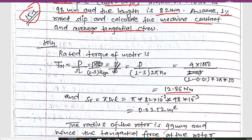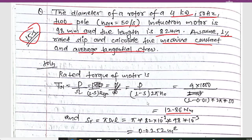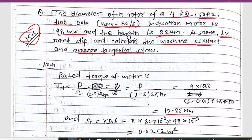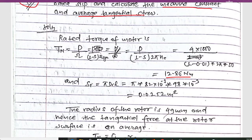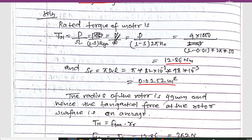The rotor surface area is calculated as Sr = π · D · L. Here the diameter D is 98 mm and the length L is 82 mm. So Sr = π × 82 × 10⁻³ × 98 × 10⁻³ = 0.0252 m².